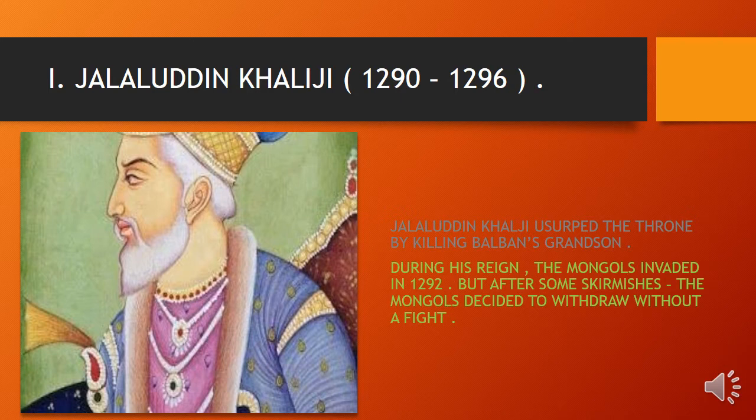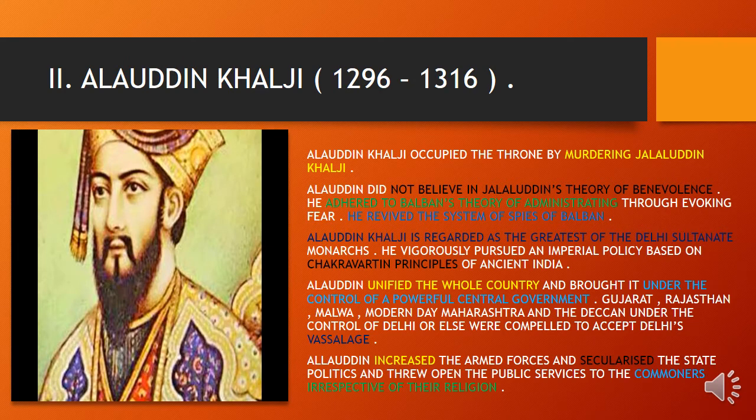Jalaluddin Khalji seized the throne by killing Balban's grandson. During his reign, the Mongols invaded in 1292, but after some skirmishes, they decided to withdraw without a fight. Alauddin Khalji then occupied the throne by murdering Jalaluddin Khalji. Alauddin did not believe in Jalaluddin's theory of benevolence; he adhered to Balban's theory of administration through fear and revived the system of spies. Alauddin is regarded as the greatest of the Delhi Sultanate monarchs, vigorously pursuing an imperial policy and unifying the whole country under a powerful central government, bringing Gujarat, Rajasthan, Malwa, Maharashtra, and the Deccan under Delhi's control.